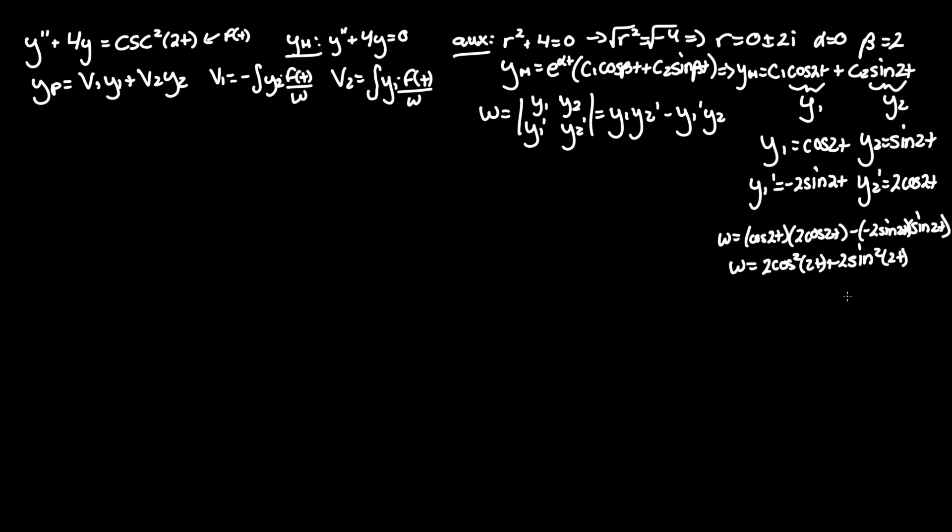And as you know from the basic trig identity, sine squared plus cosine squared equals 1. So we can just factor that out here, sine squared of 2t—it doesn't matter what's inside these parentheses, it will always be 1. And thus, Wronskian equals 2 times 1, so Wronskian equals 2.